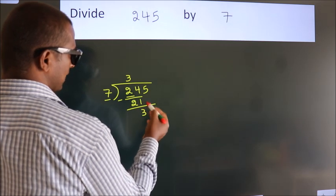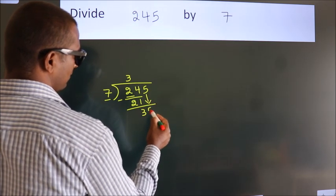After this, bring down the next number. So 5 comes down, giving us 35.